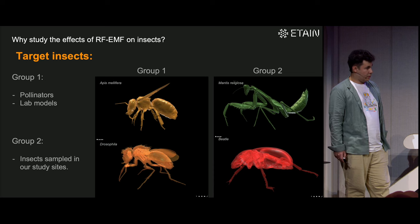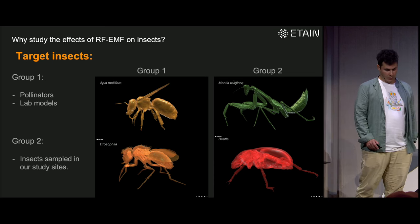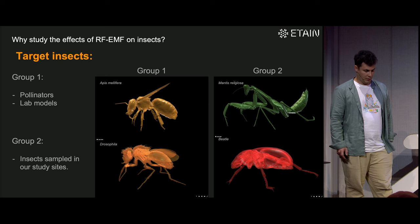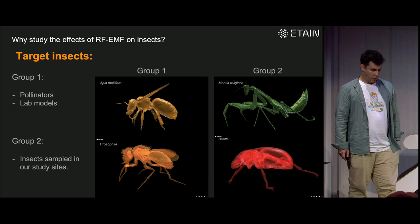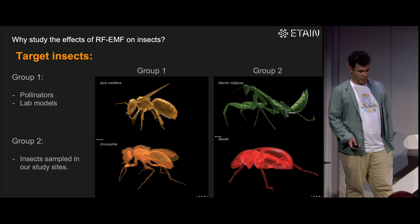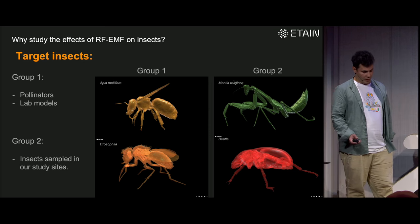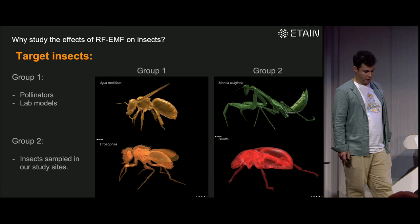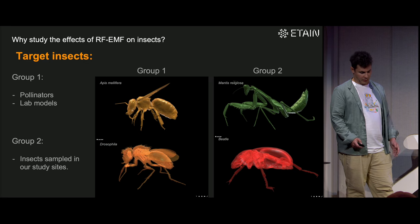In our research we mostly focus on pollinators because of their agricultural relevance, but we also use flies because they are easy to manipulate in the lab — so we can make simulations and compare with lab work. We also check biodiversity across other groups of insects.